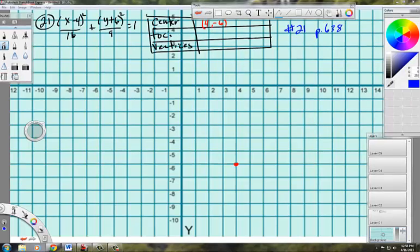Here we have another problem involving ellipses, and this is number 21 on page 638. I have already found the center of this. This time we're starting with the graph here, and we're finding the center, the foci, and all the vertices. Let me show you how to do that.